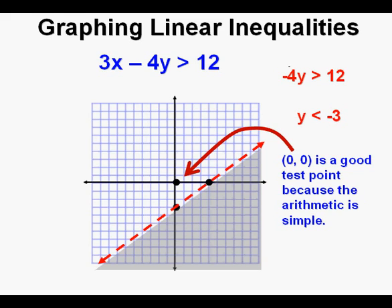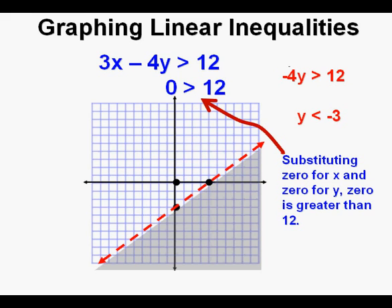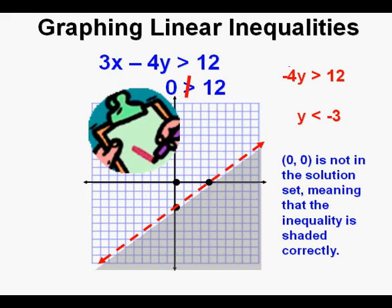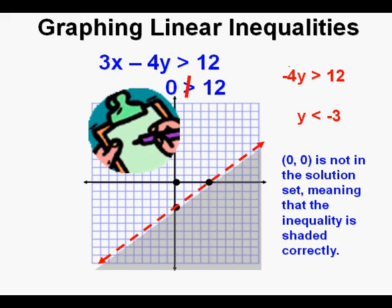Lastly, I believe in checking because it's easy to make a mistake with a sign. Remember if we had forgotten to change that sign when we divided by a negative number? I like picking the point (0, 0) at the origin because the math is so easy. Substituting 0 for x and 0 for y in our original inequality gives us 0 is greater than 12. Is 0 greater than 12? No — 0 is less than 12. So the point (0, 0) is not in the solution set or inside the shaded area. Since we have that area unshaded, we have shaded correctly by shading below that boundary line. Check.